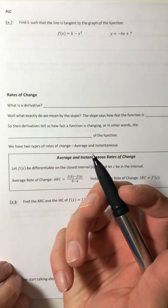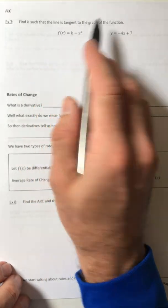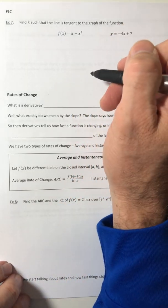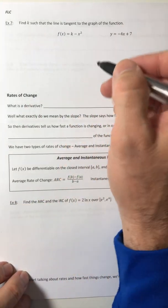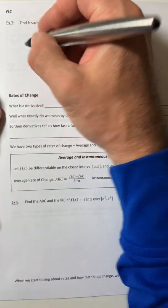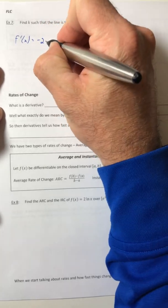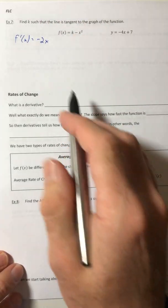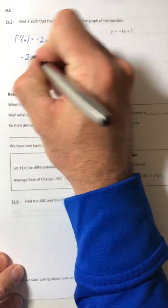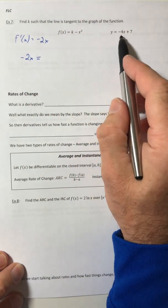So one of the things that we need to pay attention to is that this line is tangent to the graph of the function. So whenever we see tangent line or line is tangent, we're going to think of derivatives. Because again, what is a derivative? The slope of the tangent line. So let's get the derivative of the function. So that would be f'(x) = -2x. And the derivative is the slope of the tangent line.